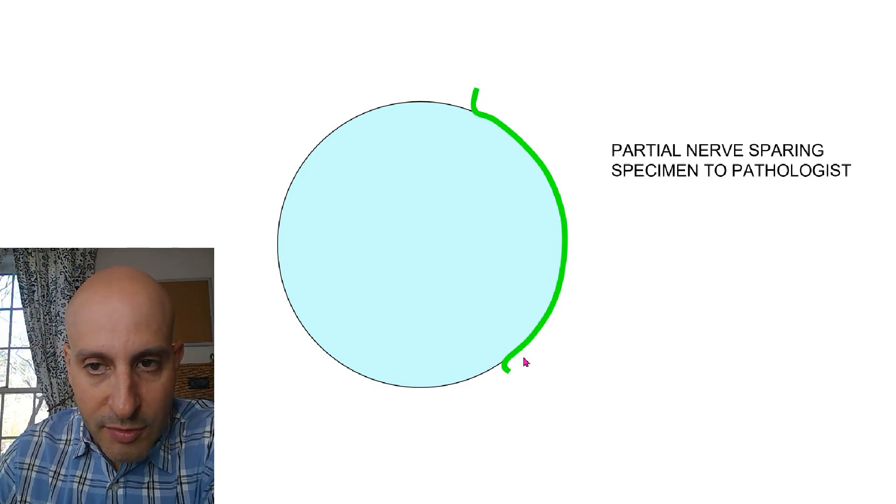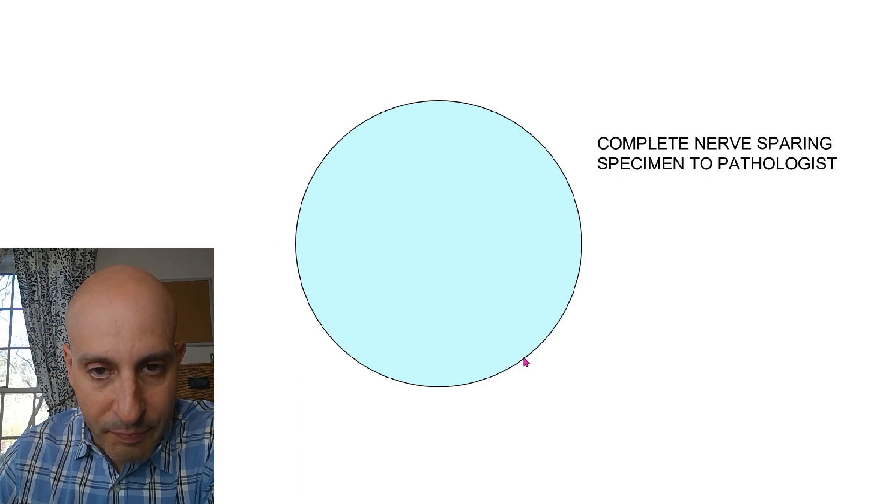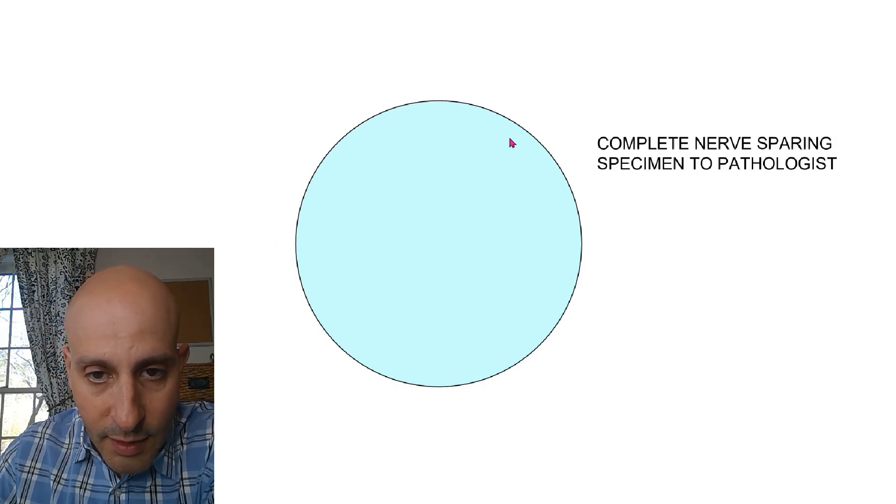If they do a partial nerve sparing, it'll look like this. And if they do a nerve sparing, it'll look just like a bare prostate.